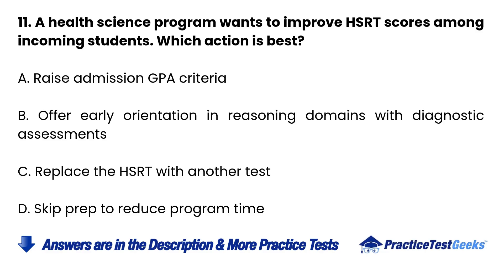Question 11: A health science program wants to improve HSRT scores among incoming students. Which action is best? a. Raise admission GPA criteria. b. Offer early orientation in reasoning domains with diagnostic assessments. c. Replace the HSRT with another test. d. Skip prep to reduce program time.